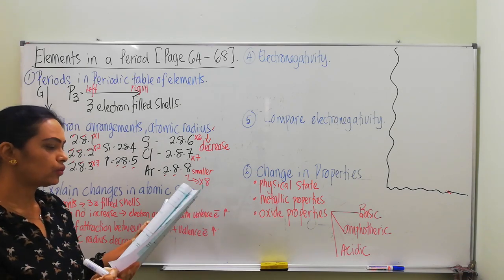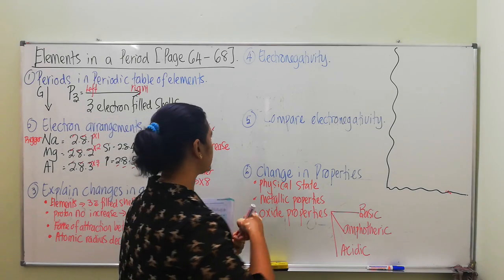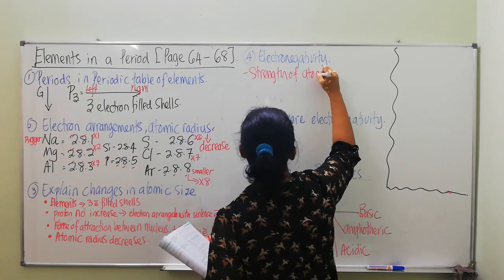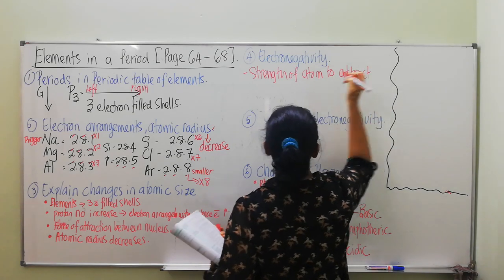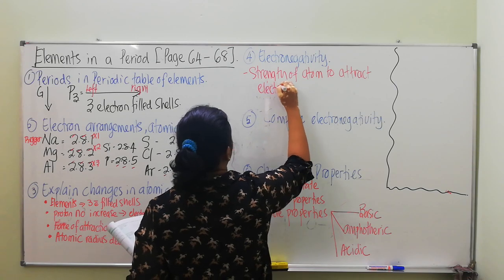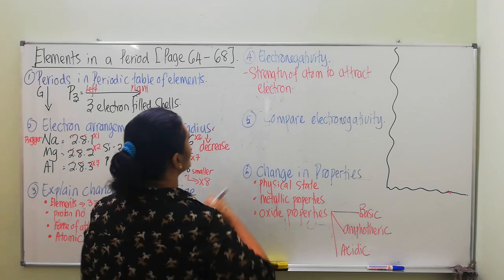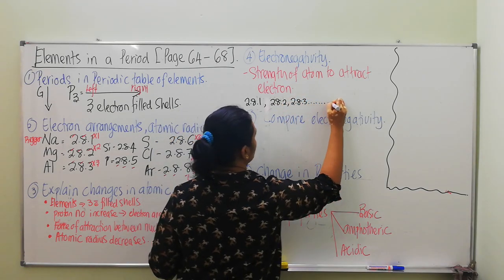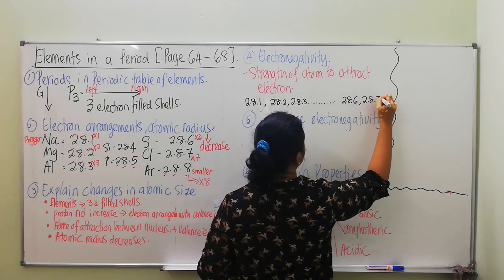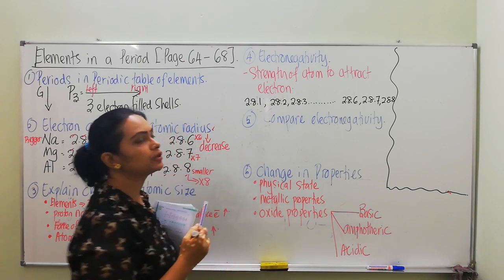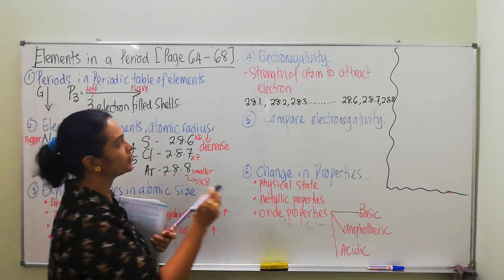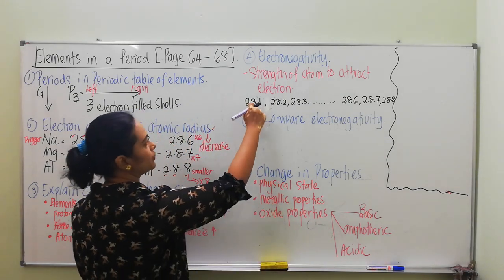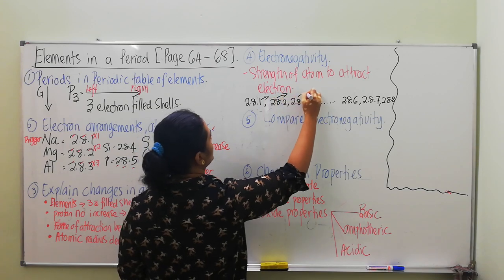Now let's go to electronegativity. Electronegativity is the strength of an atom to attract electrons. So: sodium 2.8.1, magnesium 2.8.2, aluminium 2.8.3 — continuing to sulfur 2.8.6, chlorine 2.8.7, argon 2.8.8. These are all the electron arrangements for the members of period 3. Sodium, magnesium, aluminium — they are all metals. They are not supposed to attract electrons; they prefer to give electrons away.